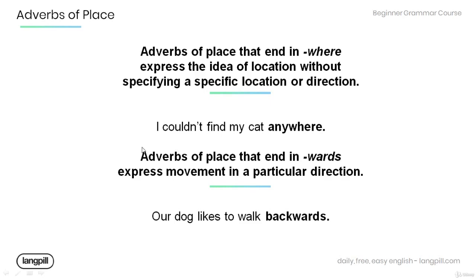Adverbs of place that end in 'wards' express movement in a particular direction. Have a look at the example below: 'Our dog likes to walk backwards.' The adverb of place 'backwards' expresses the movement of the dog.